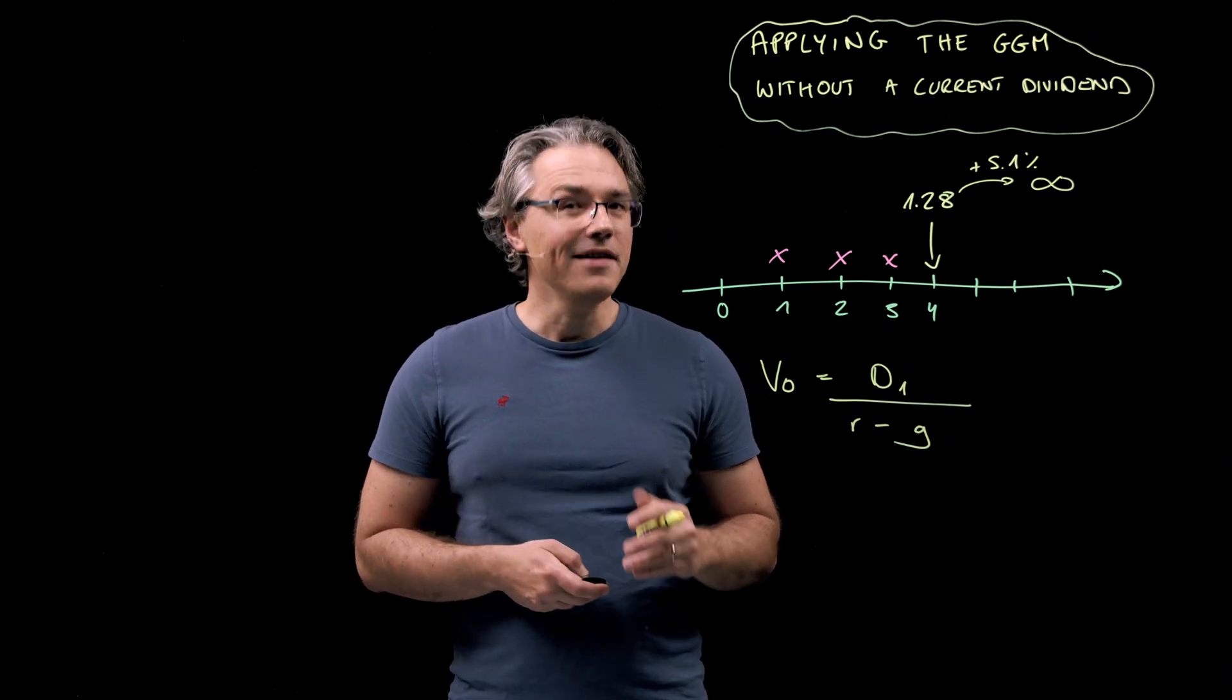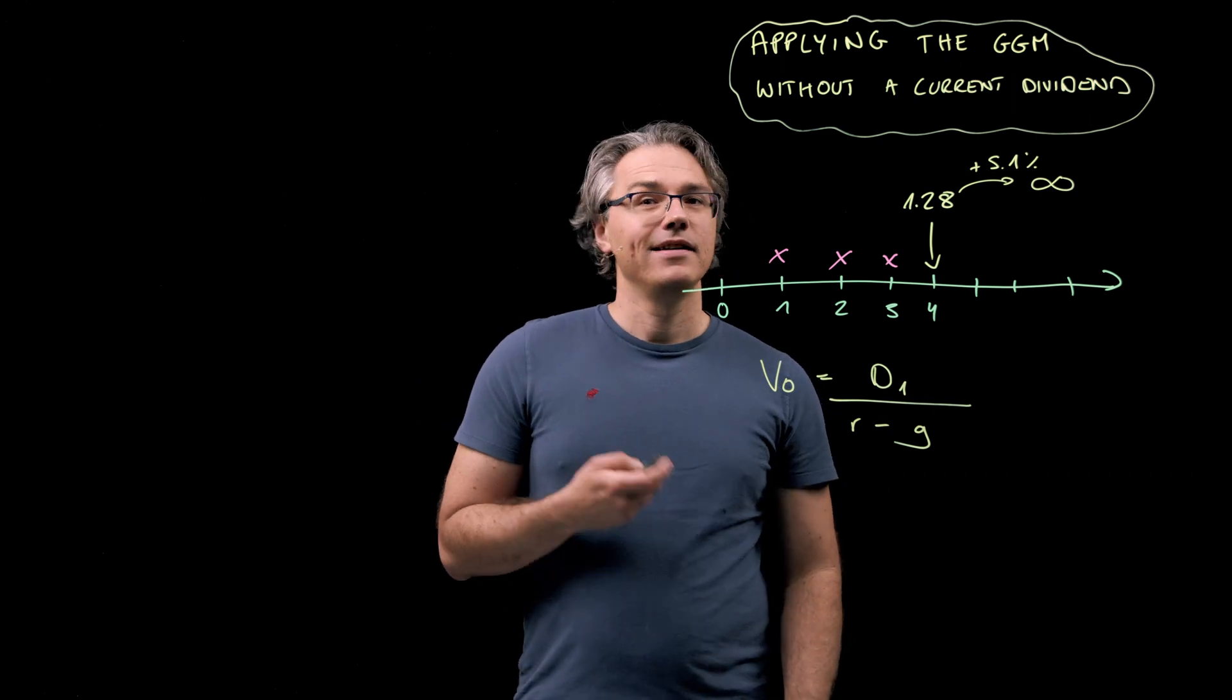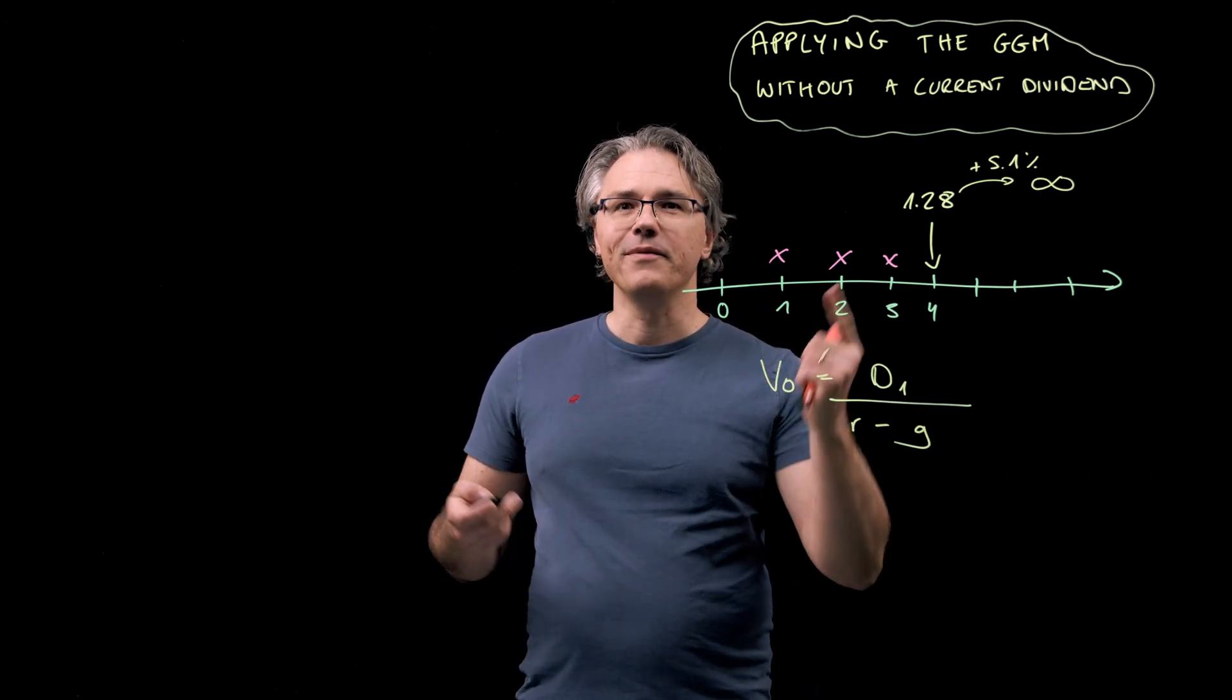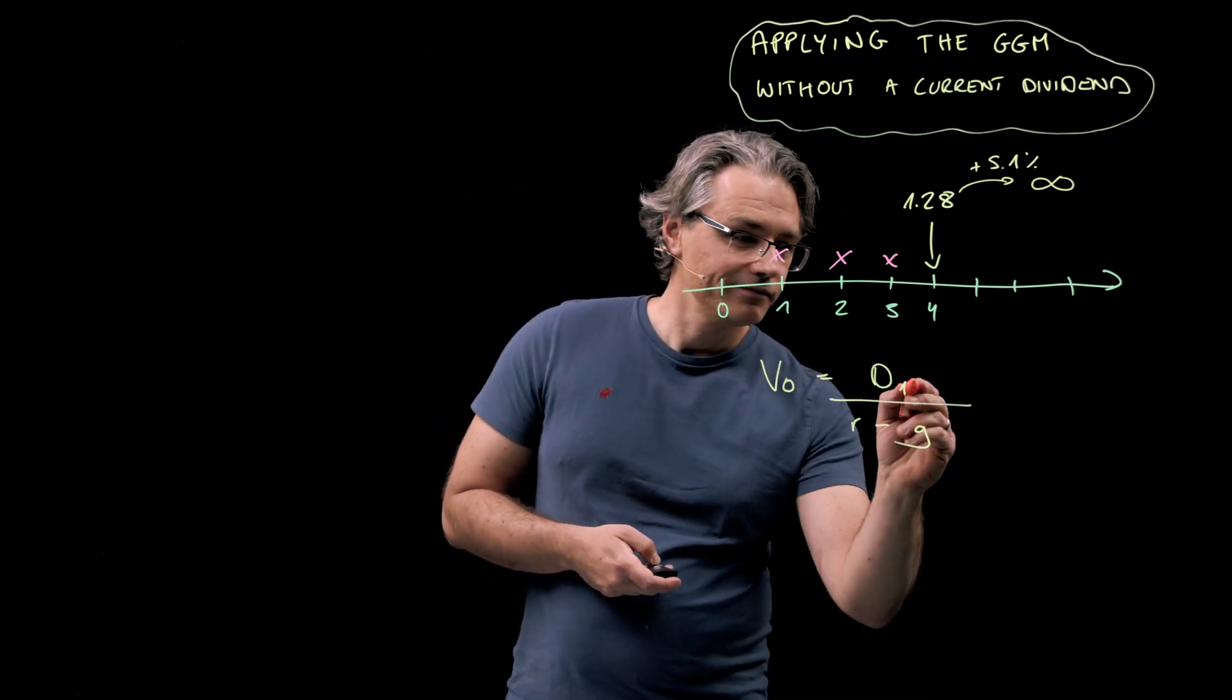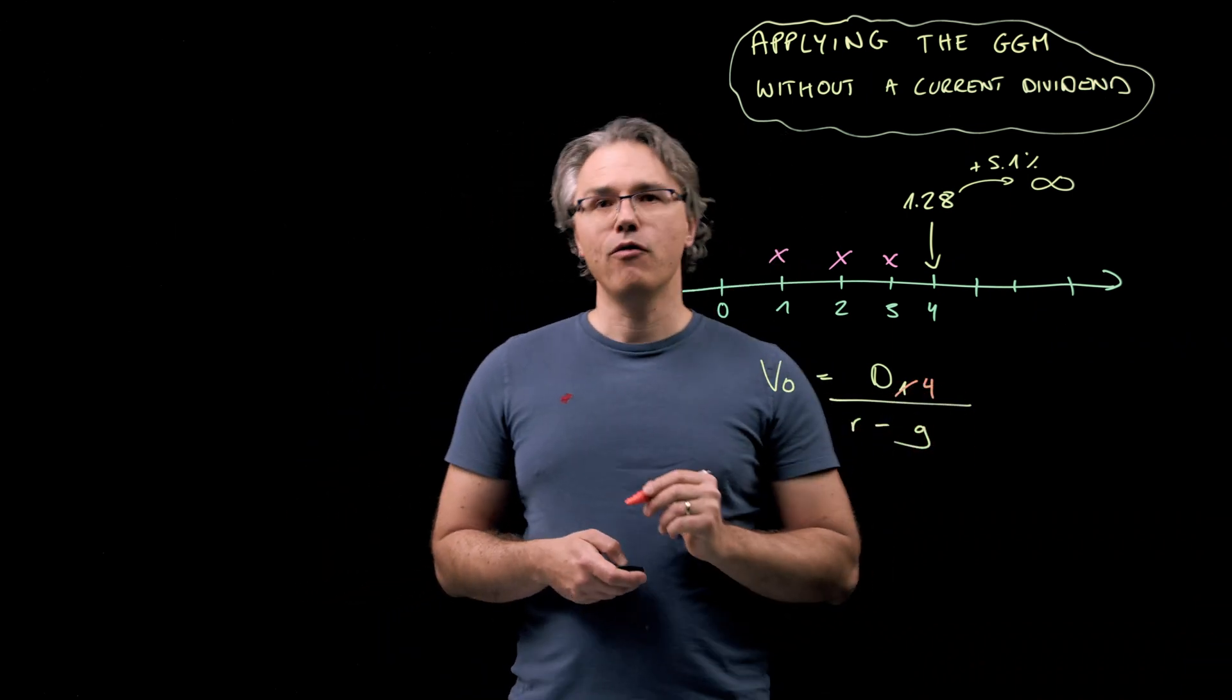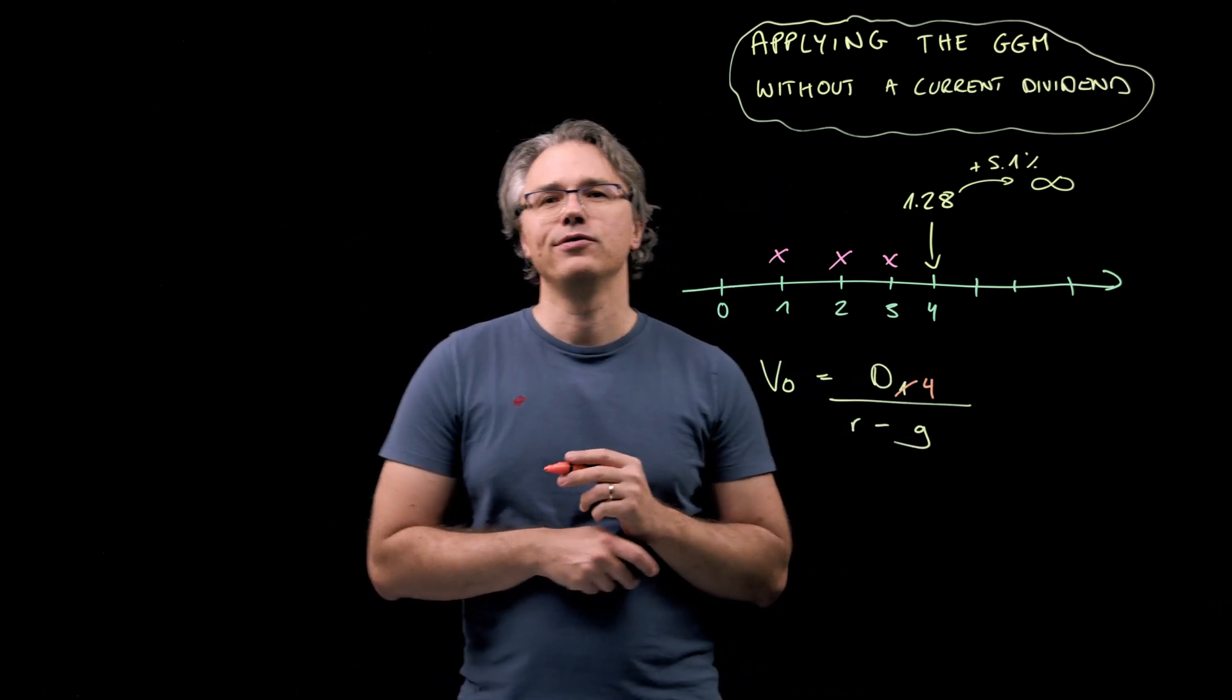Now in this question we don't have D1. There is no dividend being paid over here, but what if we replace time 1 with time 4, which is when the first dividend is scheduled to appear.